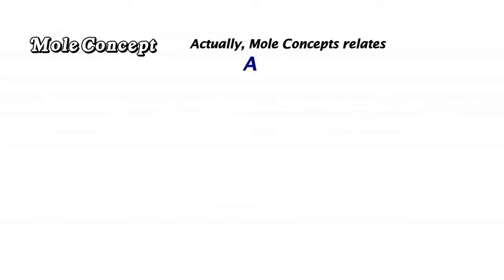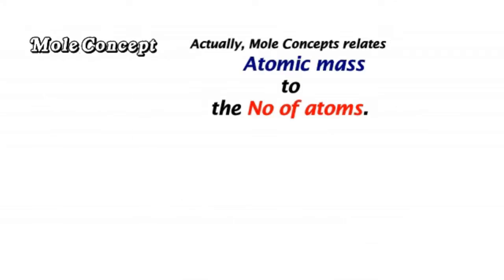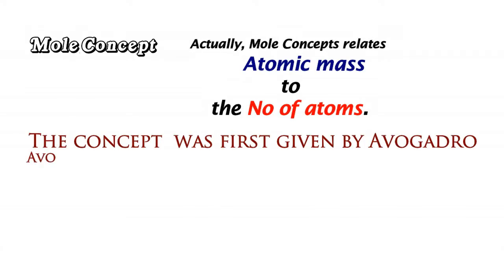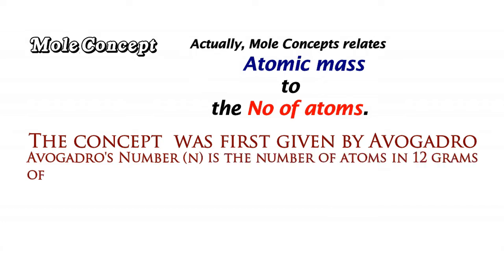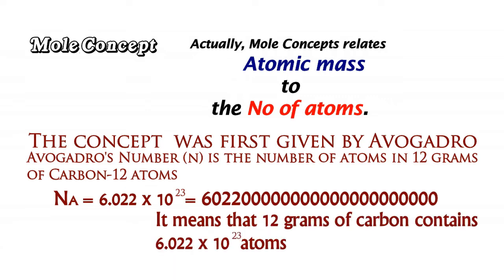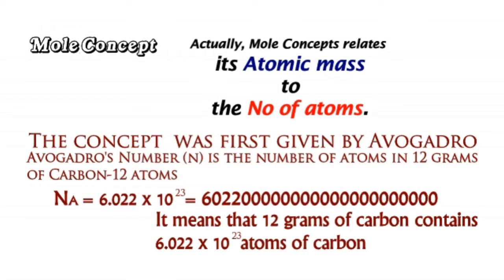Actually, mole concept relates atomic mass to the number of atoms. The concept was first given by Avogadro. Avogadro's number is the number of atoms in 12 grams of C-12 atom. It means that 12 grams of carbon contains 6.022 × 10^23 atoms of carbon, or we can say 12 grams contain 1 mole of carbon.